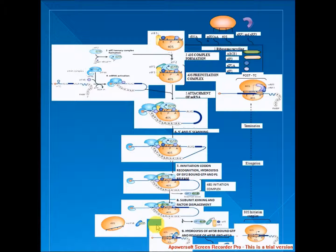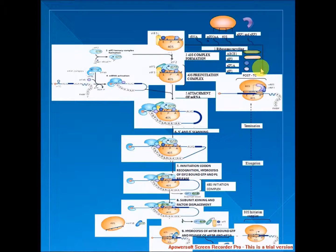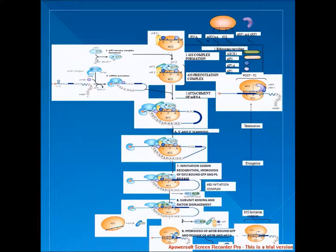Stage 8 is GTP hydrolysis by EIF5B and release of EIF1A and GDP-bound EIF5B from assembled, elongation-competent 80S ribosomes. Translation is a cyclical process in which termination follows elongation and leads to recycling, which generates separated ribosomal subunits. The model omits potential closed-loop interactions involving poly-A binding proteins (PABP), eukaryotic release factor 3 (ERF3), and EIF4F during recycling. Whether ERF3 is still present on ribosomes at the recycling stage is unknown.